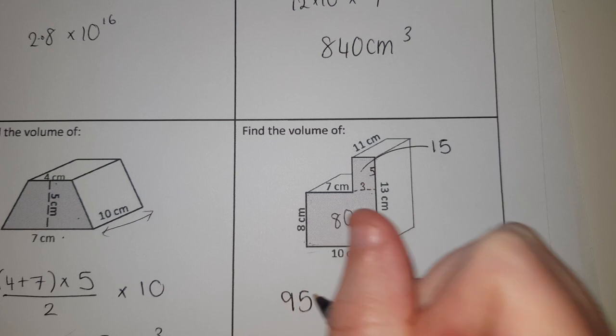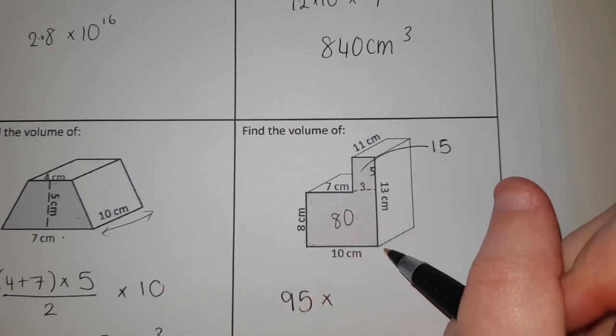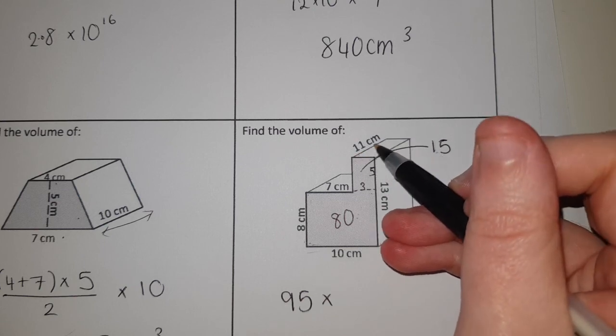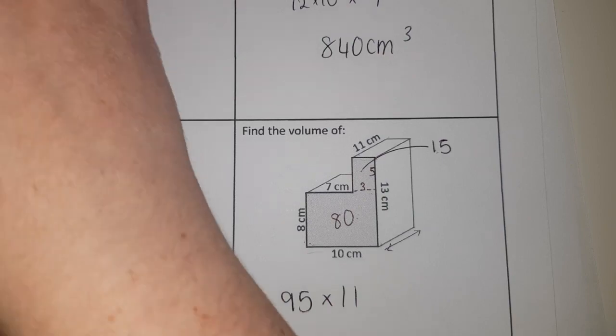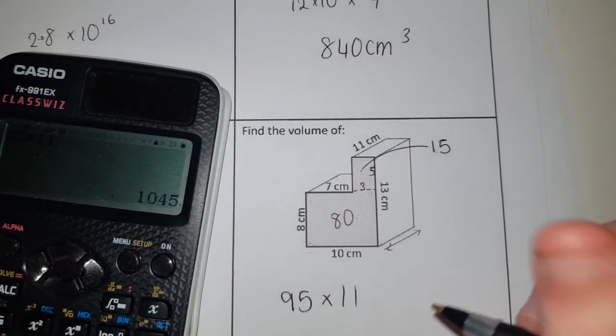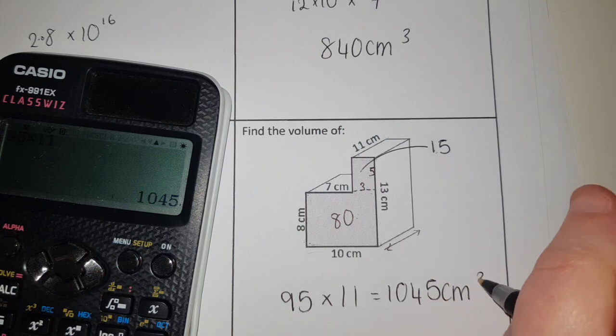And then all I need to do is times it by how deep the shape is, which in our case is 11 centimetres. So I just need to do 95 times 11. We're going to get 1045 centimetres cubed.